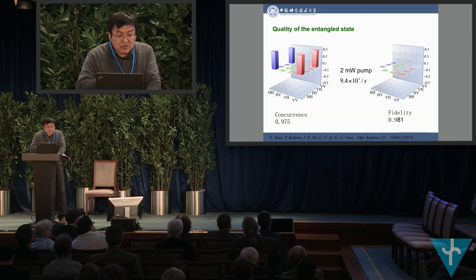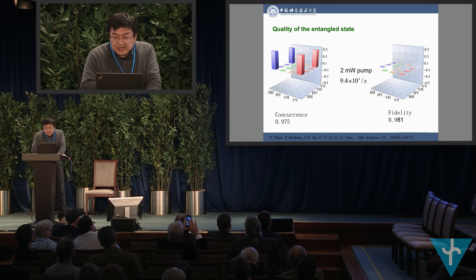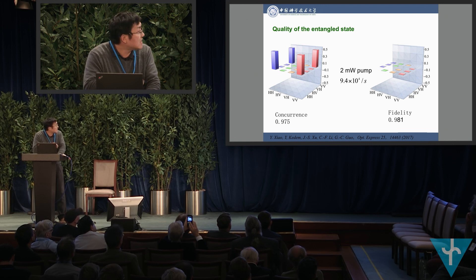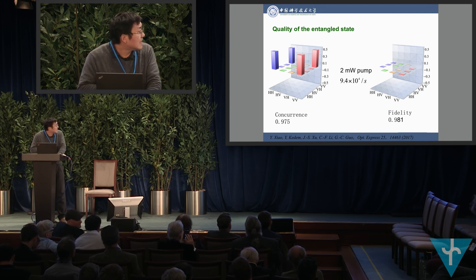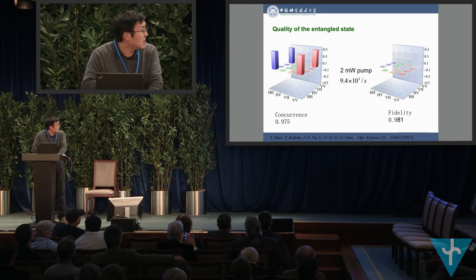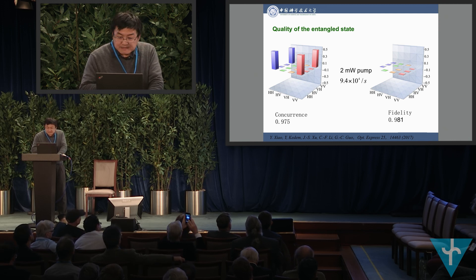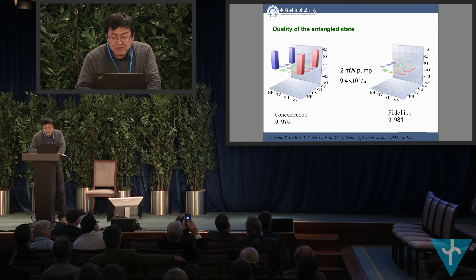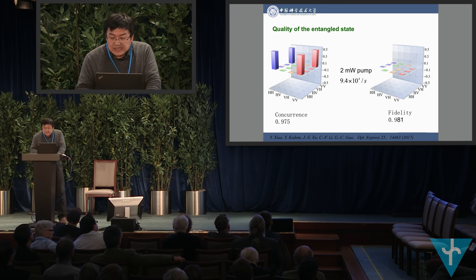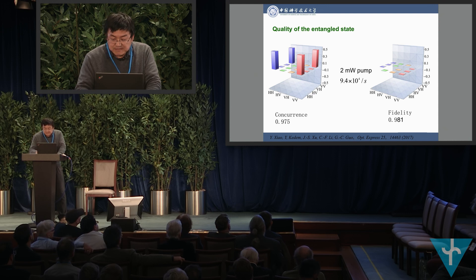The quality of our entangled photon state has a concurrence of 0.975 and fidelity up to 0.981. When we pump with 2 mW, we get 94,000 entangled photon pairs per second.